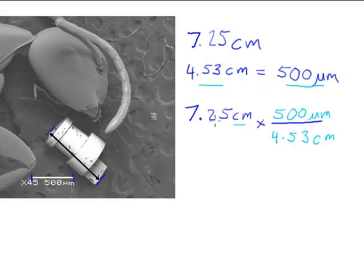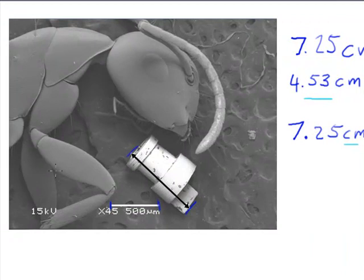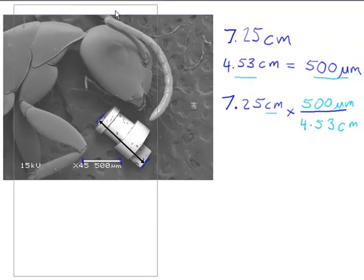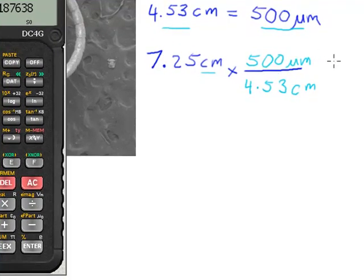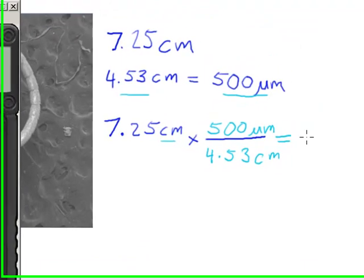So then I'm going to do the math for this, so I'll bring over my calculator, and 7.25 times 500 divided by 4.53, and enter that, and I have a value of 800.